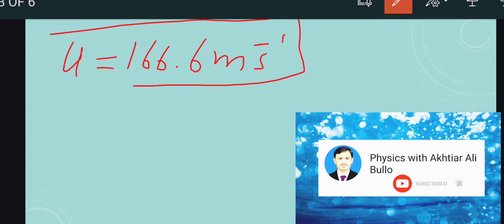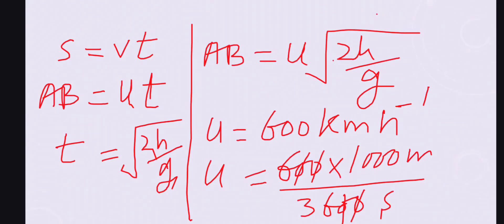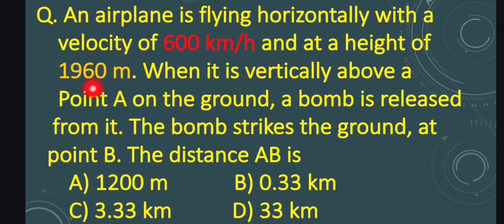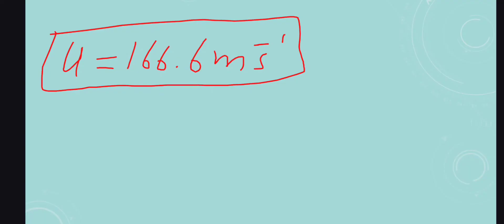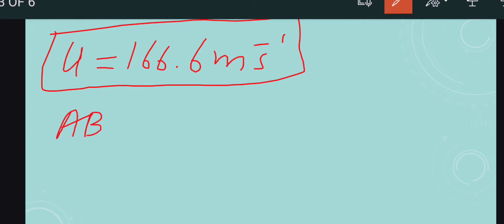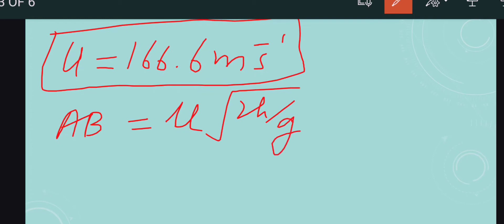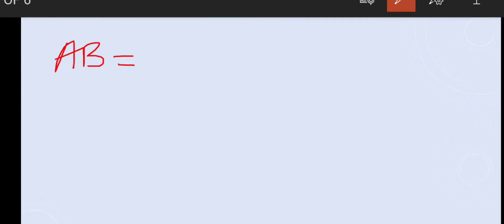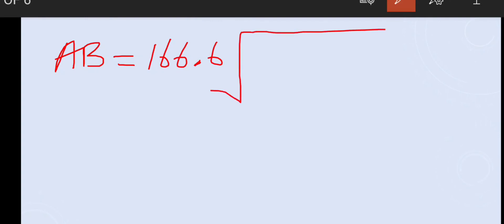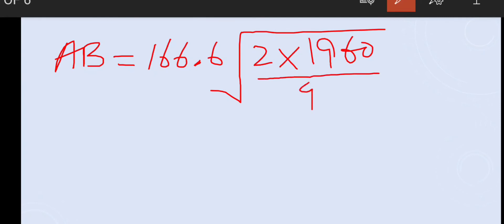Now we calculate distance AB. With U = 166.6 m/s and height H = 1960 meters, AB = U × √(2H/g) = 166.6 × √(2 × 1960 / 9.8), where g = 9.8 m/s². When we simplify this expression further, we get the answer.